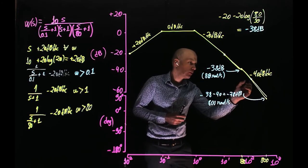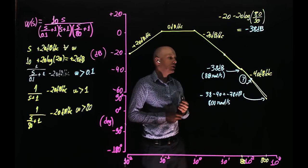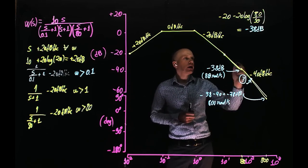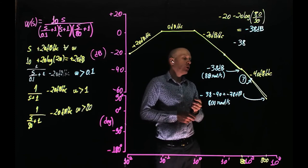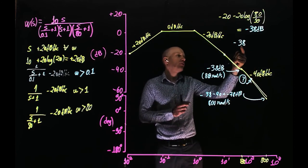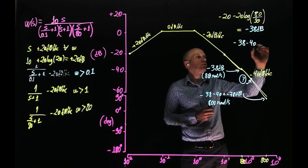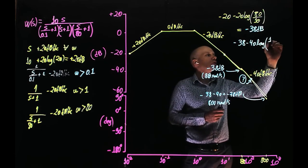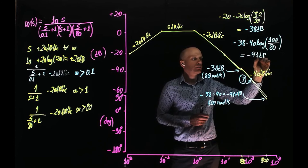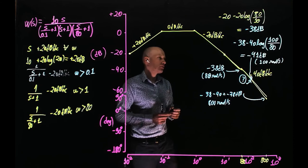What is the actual magnitude at 10 to the power of 2 radians per second? Try to do that on your own — use the same approach and figure out the magnitude at 100 radians per second. Here is the solution: if at 80 we are at negative 38 dB and the slope is negative 40 dB per decade, we have only a jump of 100 over 80. So negative 40 log of (100/80) added to negative 38 gives negative 41 dB. So at 100 radians per second, the magnitude is negative 41 dB.